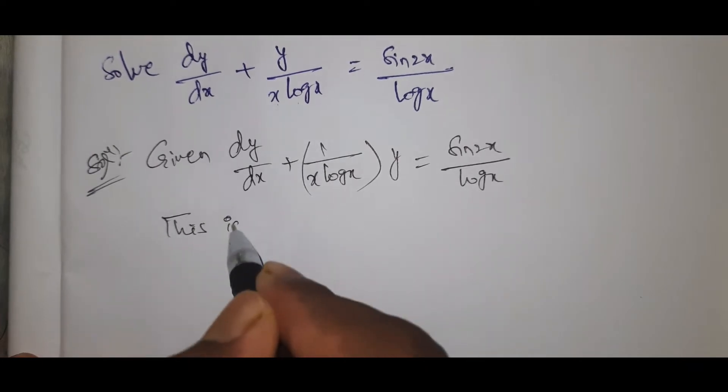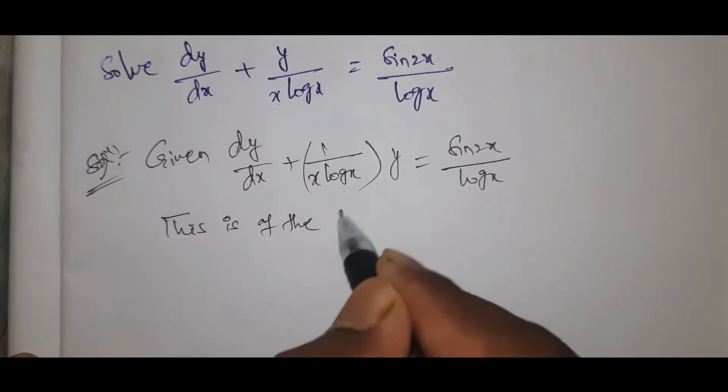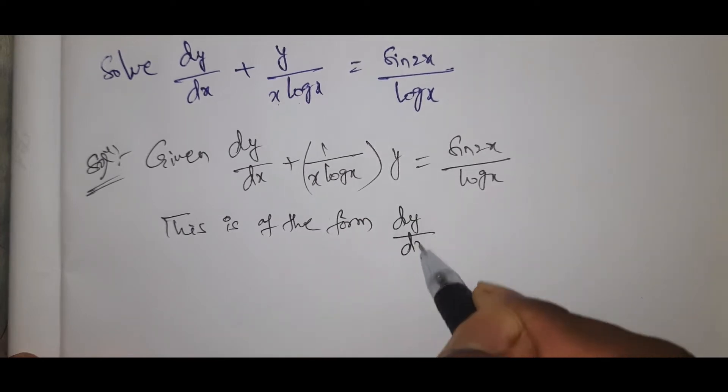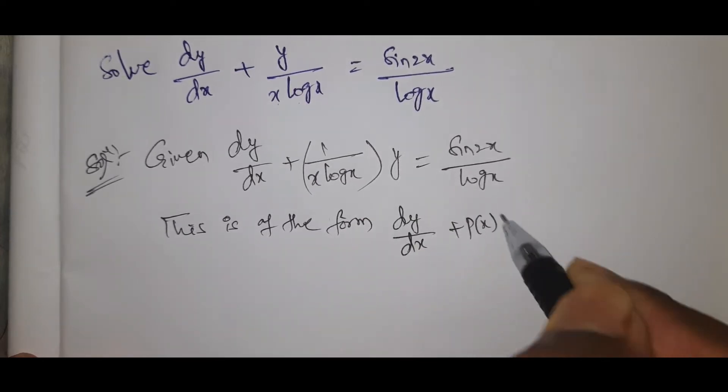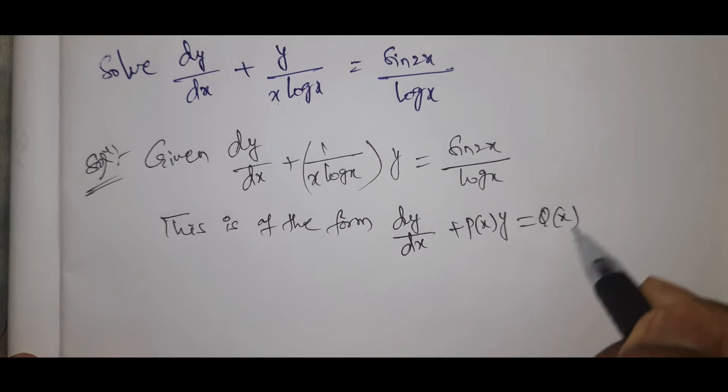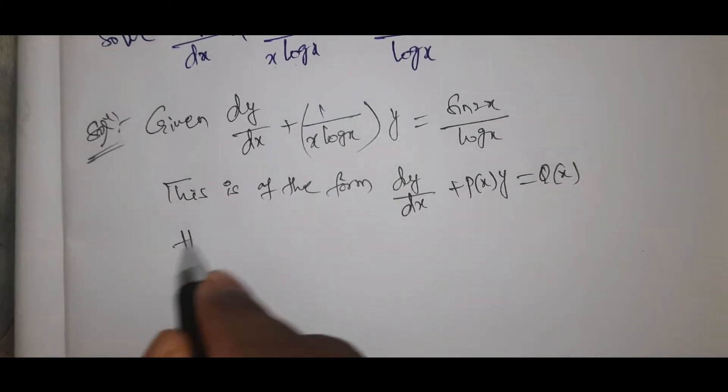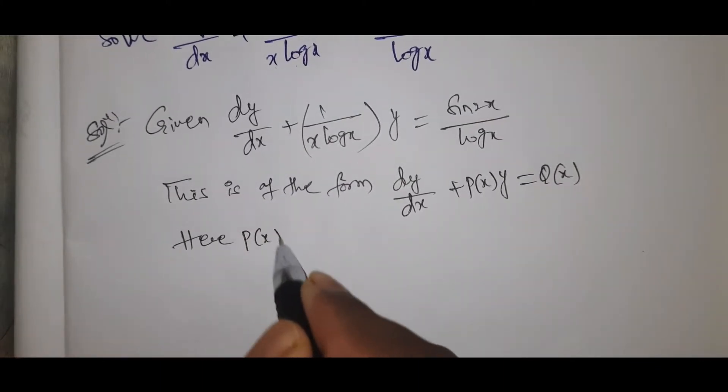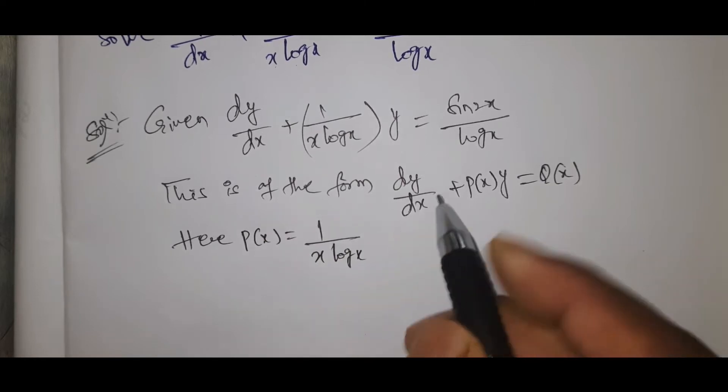This is of the form dy by dx plus P of x into y equals Q of x. Here P of x, what is it? Equal 1 by x log x.